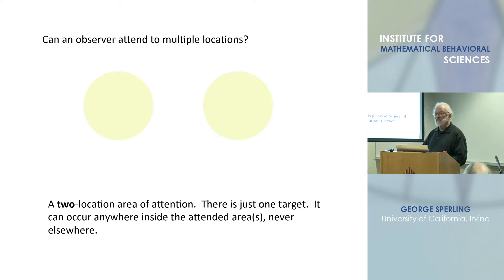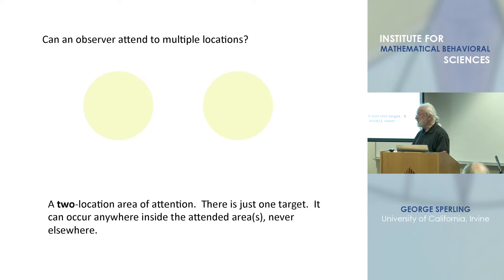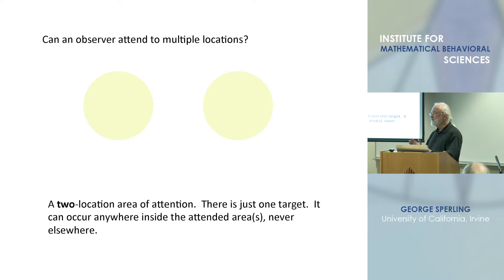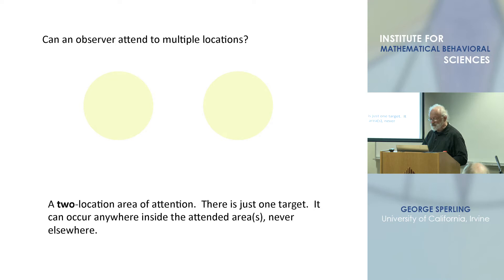The way to get around this is to switch to what I call a concurrent task, where you ask the observer to always report on both locations anyway, and to give more weight to one location — like 90 percent of your weight — where that location has a target maybe 90 percent of the time and the other only 10 percent of the time. So you can manipulate the observer's ability to allocate attention differentially to one location or another.